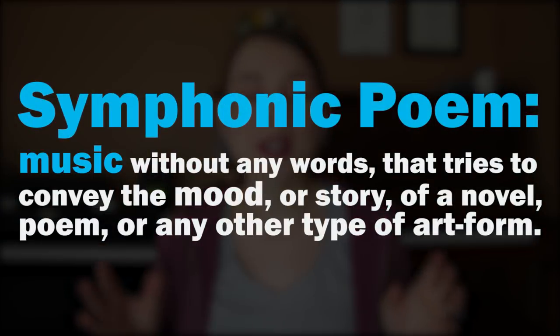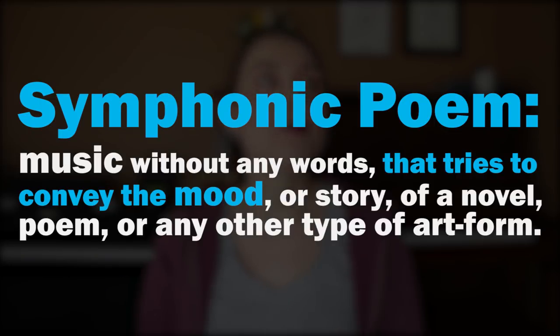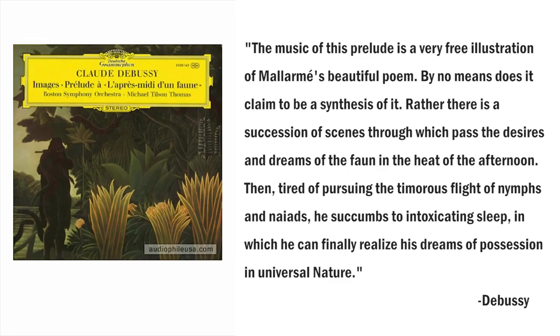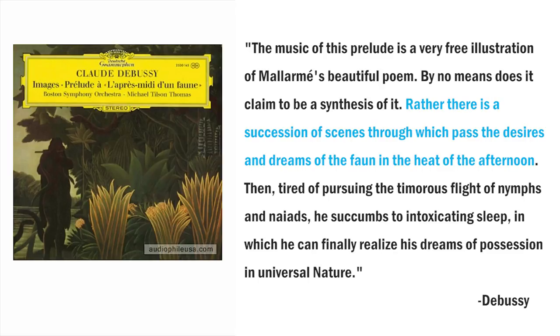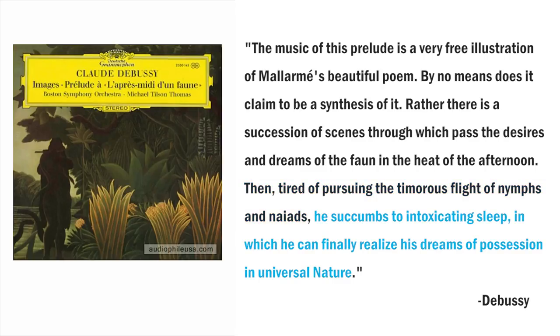Prelude to the Afternoon of a Faun is very ambient and dreamlike, and it's essential in any type of musical education class or study. This is a 10-minute symphonic poem composed in 1894. A symphonic poem is basically music without any words that tries to convey the mood or the story of a novel, poem, or any other art form. This is what Debussy himself had to say: 'The music of this prelude is a very free illustration of Mallarmé's beautiful poem. Rather, there's a succession of scenes through which pass the desires and dreams of the fawn in the heat of the afternoon. Then, tired of pursuing the timorous flights of nymphs and naiads, he succumbs to intoxicating sleep in which he can finally realize his dreams of possession in universal nature.'